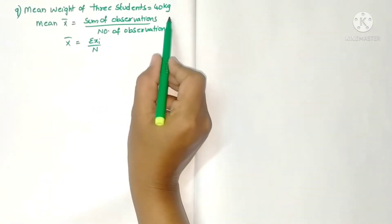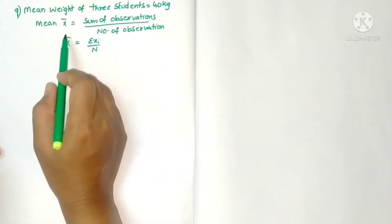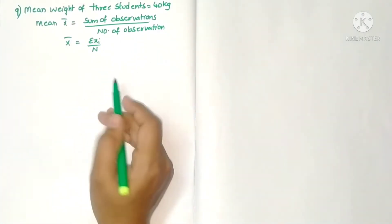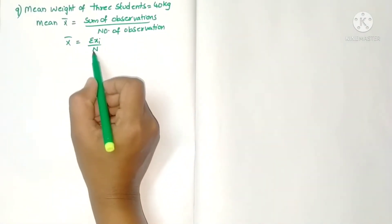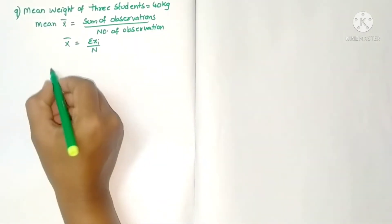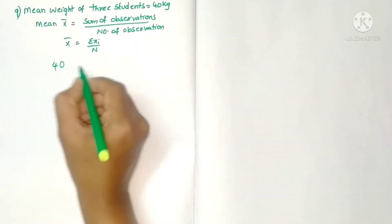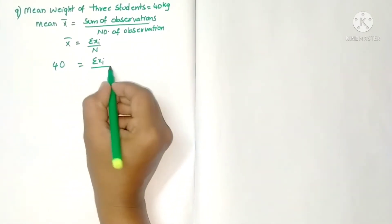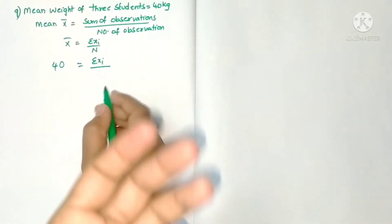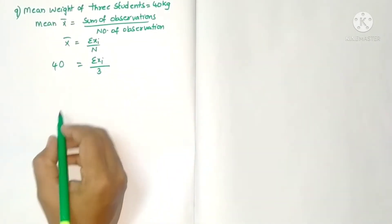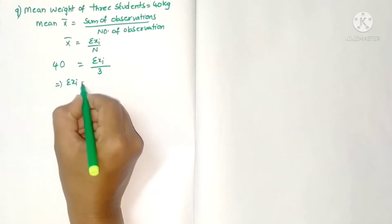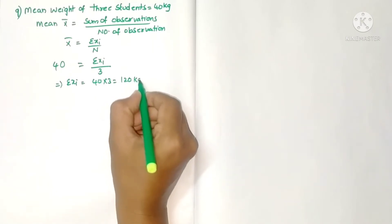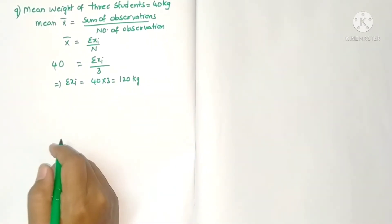The given mean weight of three students is equal to 40 kg. The mean formula we know is x-bar equals sum of observations by number of observations, that is sigma xi by n. Here mean is 40, number of observations is 3 students, so sigma xi equals 40 into 3, which is 120 kg.